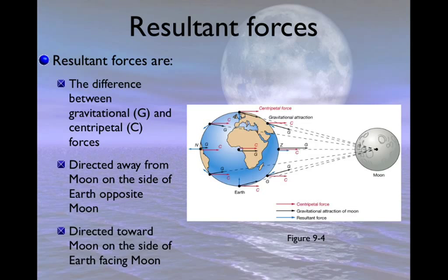If you were to add these together, you would get what we call the resultant forces, and that's directed in blue. The resultant force is basically what you get when you add up vectors — the math is going to be outside the scope of this class. But basically, you end up with these blue arrows that point in all sorts of weird directions, and this is what you get when you add gravity and centripetal force. They seem to be going towards the Moon in this diagram.